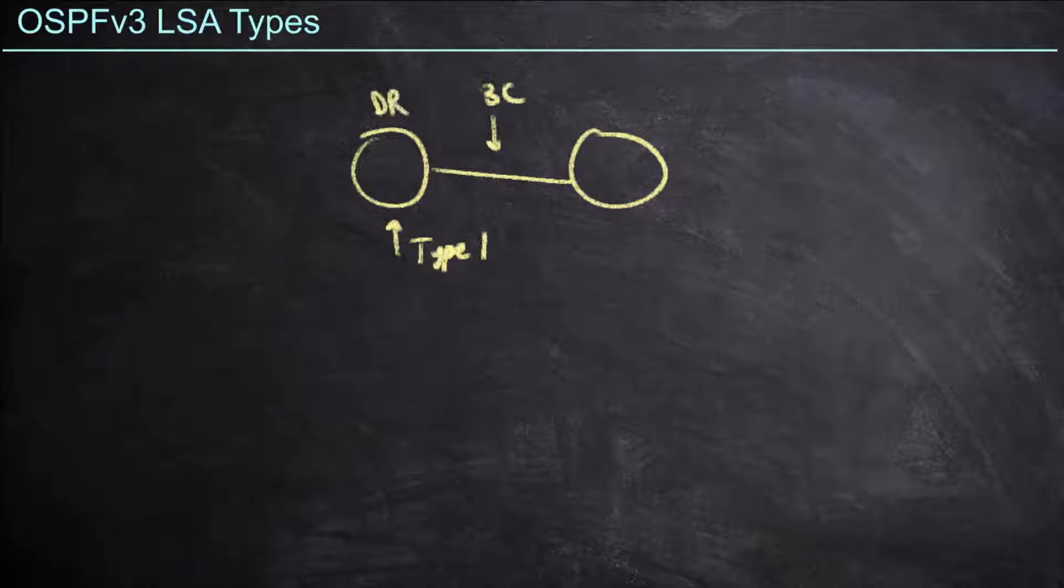Fortunately, by learning the OSPF version 2 LSA types, all we really need to do is focus on the differences between OSPF v2 and OSPF v3. One of the biggest differences is that when we have two routers exchanging LSAs, we remember that each router is going to send out type 1 LSAs. And then, if this is a broadcast link,